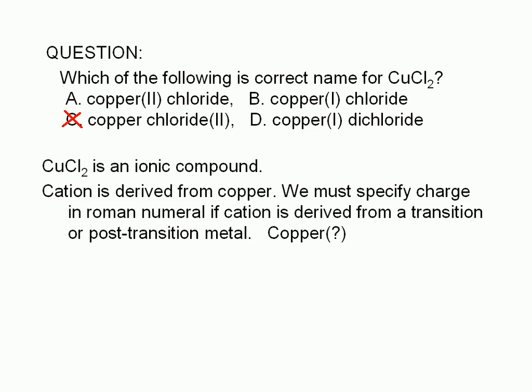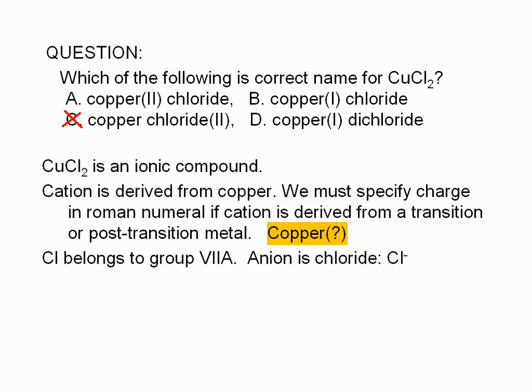So how do we determine the charge of the copper ion? We look at the anion, which in this case is derived from chlorine. By referring to a periodic table, we find that chlorine is a halogen — it belongs to group 7A. Therefore, we expect monatomic ions derived from chlorine to have a negative 1 charge. The chloride ion is Cl with a negative 1 charge.